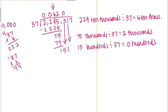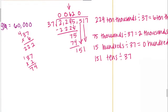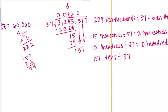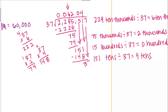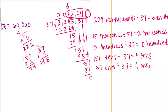Let's keep going. Bring down the 1. Now we have 151 tens that we're going to divide by 37. Times 6 was 222 — let's try times 4. 7 times 4 is 28, carry the 2. 4 times 3 is 12, plus 2 is 14 — 148. So we can go in 4 times, equal to 4 tens. We get 3 left, bring down the 7. Our final one: 37 ones divided by 37 is equal to 1. So we get 62,041, which is close to our estimate of 60,000.